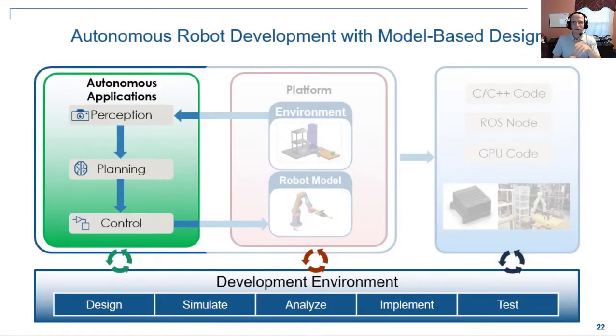All right, moving on to the next pillar, right, adding autonomous algorithms for perception, planning, control. Again, we have a robot model. Now we have simulated sensors. How do you add algorithms for autonomy? And before we jump into a perception example, let's look at how deep learning can be applied on a robot.